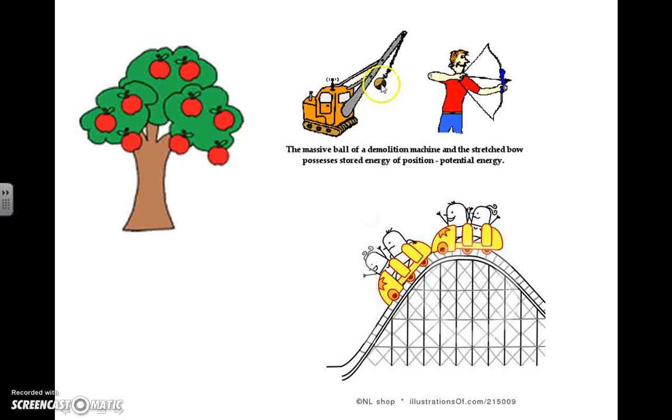This wrecking ball here has potential energy because it is at the side of one of its swings, and therefore it has height above the relative frame of reference here. So if it's swinging forward, it is converting gravitational potential energy into kinetic energy, which would then transmit to the building that it is trying to demolish.